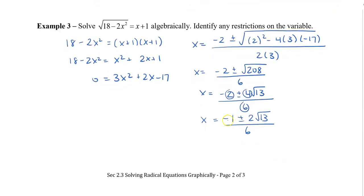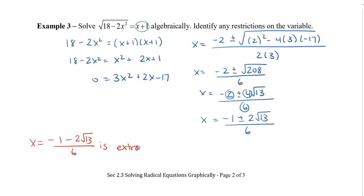When I plug in both answers — negative 1 plus 2 root 13 over 3, and negative 1 minus 2 root 13 over 3 — I can see that the negative version would give a negative value on the right side, and since square roots can't produce negative numbers, negative 1 minus 2 root 13 over 3 is extraneous. Therefore, my only solution is the positive one: x equals negative 1 plus 2 root 13 over 3. You can verify this by plugging it into your calculator.